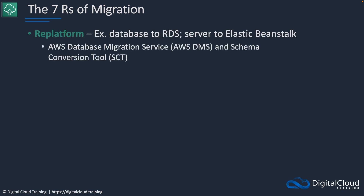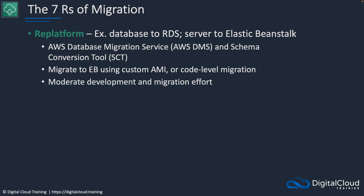For re-platforming, a couple of options would be to use the Database Migration Service and the Schema Conversion Tool for a database, or you might migrate to Elastic Beanstalk using a custom AMI or a code-level migration. There's a moderate amount of development and migration effort. For example, you might use DMS to migrate your on-premises database to Amazon Aurora.